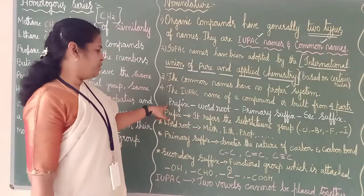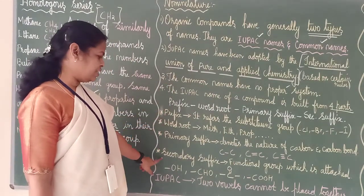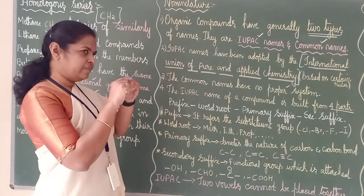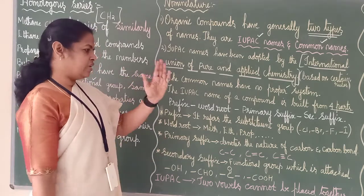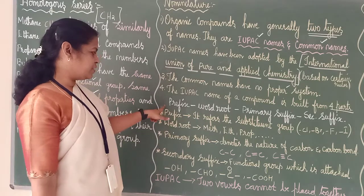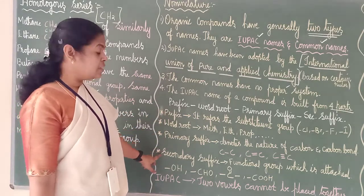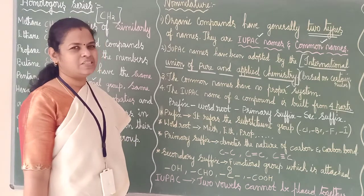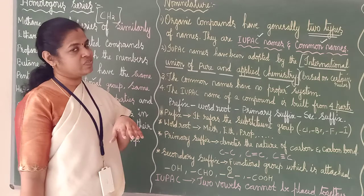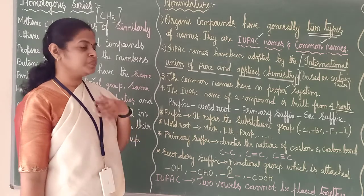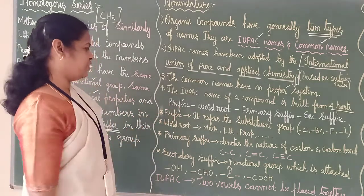What are the four parts? Prefix, word root, primary suffix, and secondary suffix. Every word will have these four parts. Prefix will be added at the front and suffix will be added at the end of the word, with the root word in the middle.